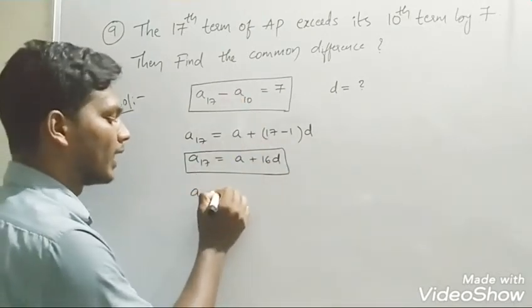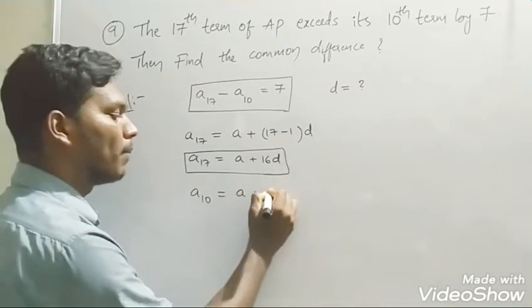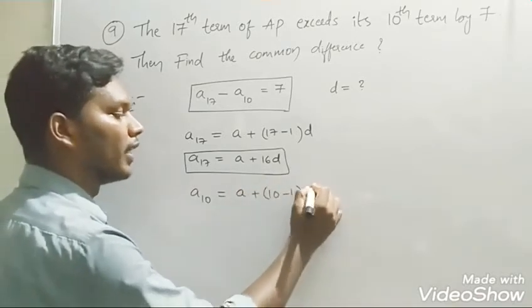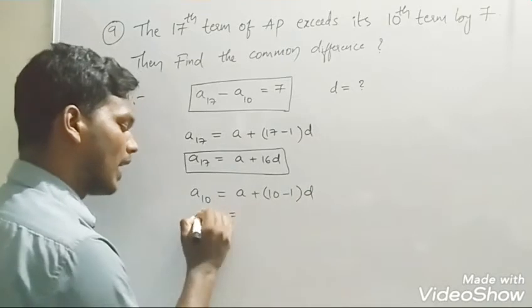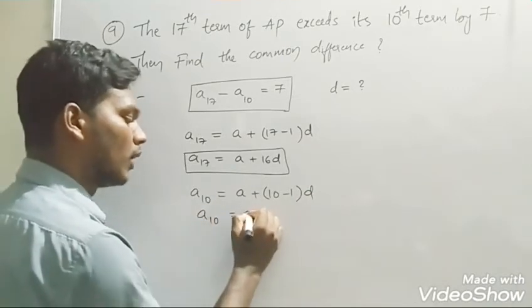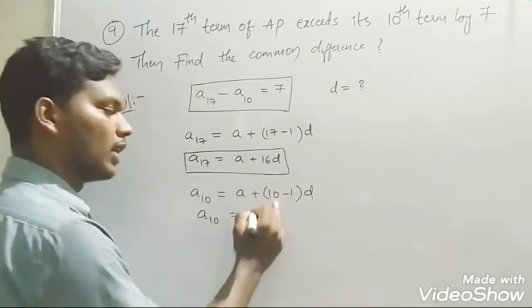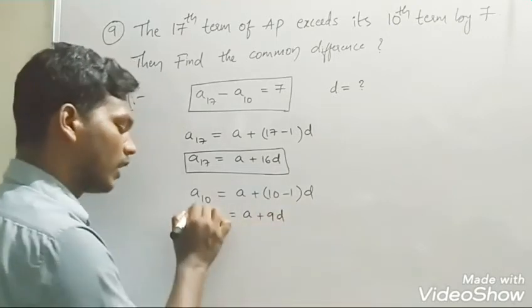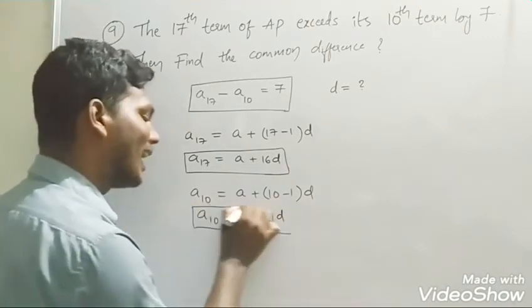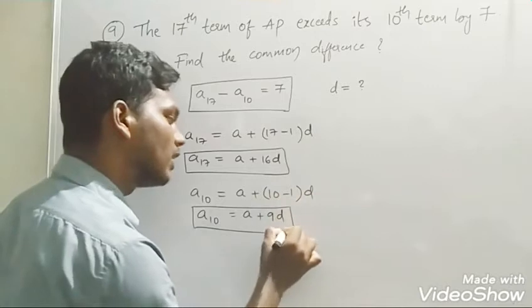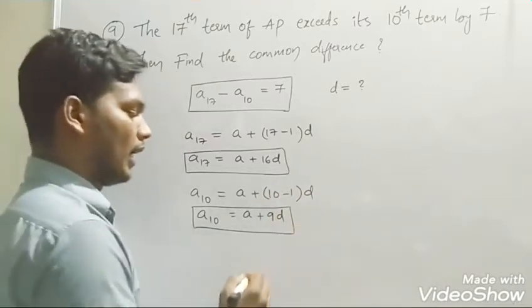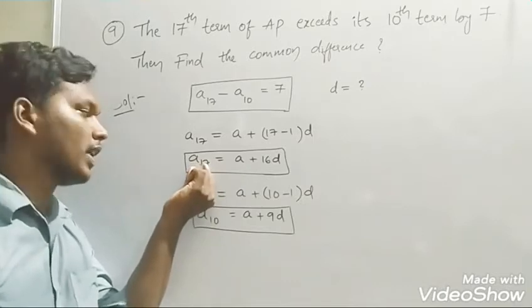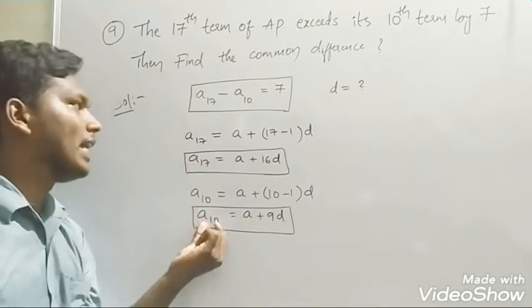Next, find the 10th term. a₁₀ equals a plus (10 minus 1) times d, so 10 minus 1 is 9, giving us a₁₀ equals a plus 9d.